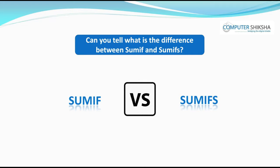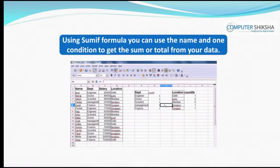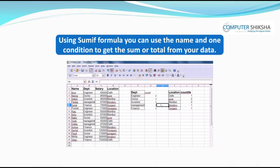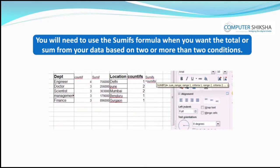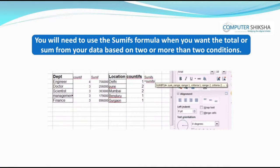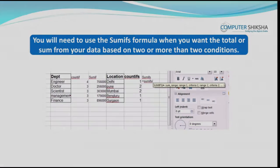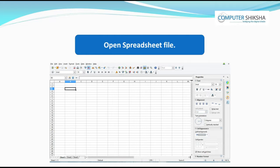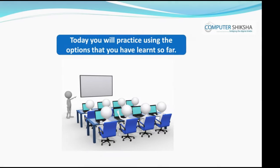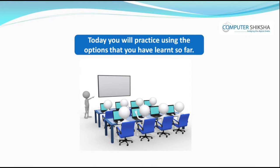Can you tell what is the difference between SUMIF and SUMIFS? Using the SUMIFS formula, you can use the name and another condition to get the sum or total from your data. You will need to use the SUMIFS formula when you want the total or sum from your data based on two or more than two conditions. Now, all of you switch on your computers and open your spreadsheet file using any of the methods taught to you. Today, you will practice using the options that you have learned so far.